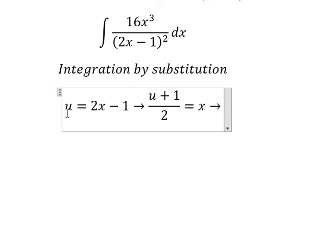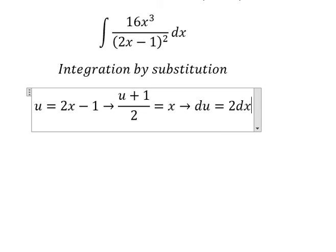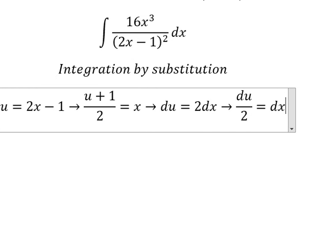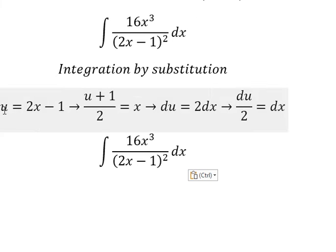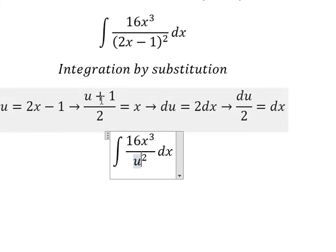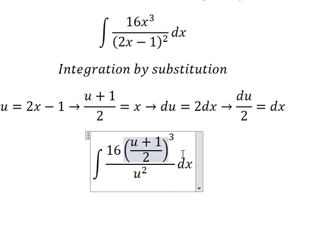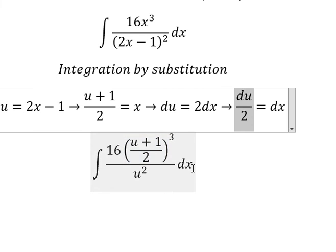Next we need to find the derivative du. From u = 2x - 1, we get du = 2dx, so dx = du/2. Now we substitute: u replaces 2x - 1, and x is replaced by (u+1)/2.